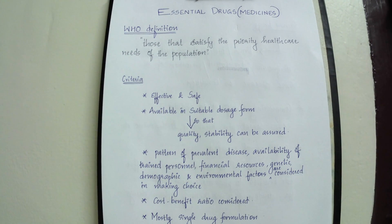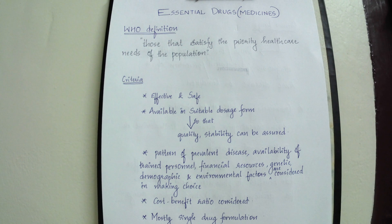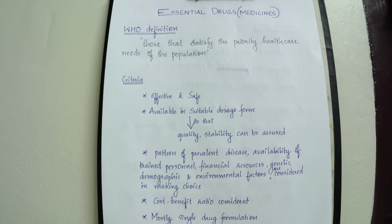Hi guys, welcome to World of Pharmacology. Today we are looking into two topics: essential drugs and orphan drugs. Essential means absolutely necessary or extremely important. According to WHO, the World Health Organization, essential drugs are those that satisfy the priority health care needs of the population. These medicines should be available at all times in adequate amounts and at an affordable price.